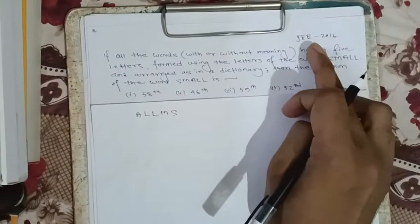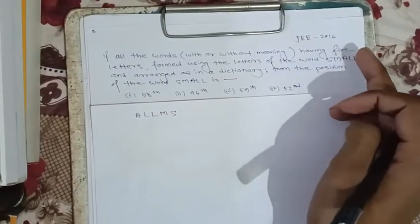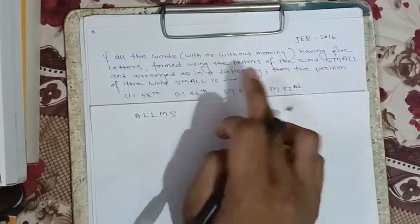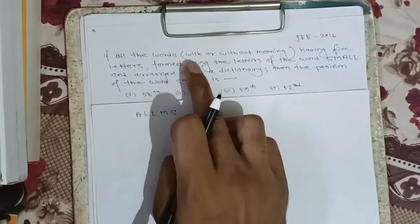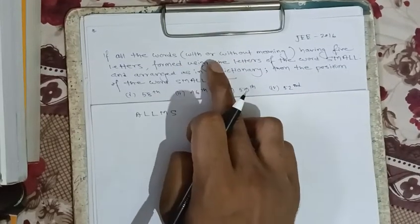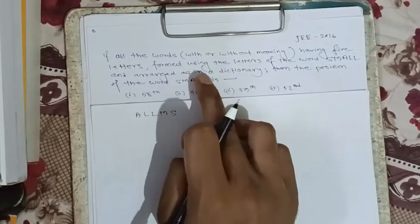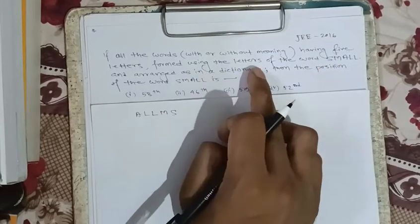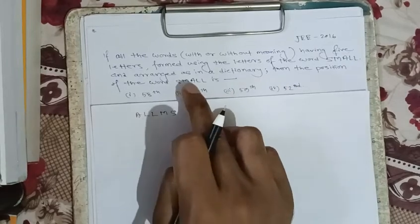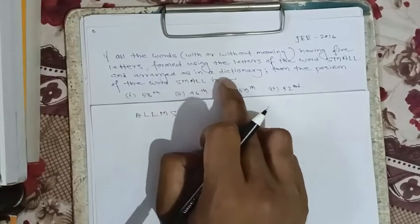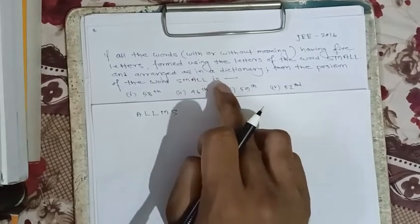Hi friends, I have a question from GMAINE 2016. This question is from permutation and combination. The question is: if all the words with or without meaning having 5 letters, formed using the letters of the word SMALL and arranged as in a dictionary, then find the position of the word SMALL.